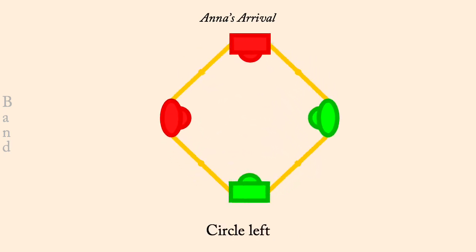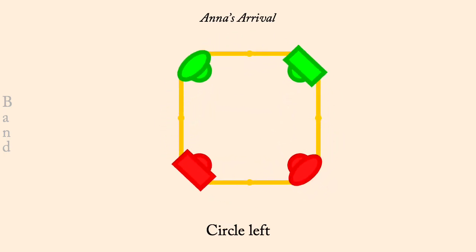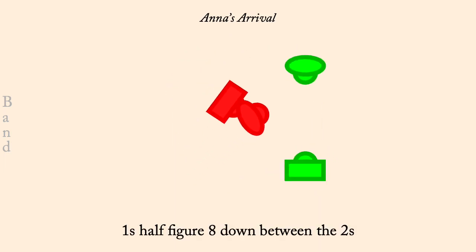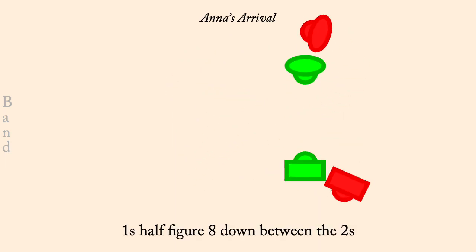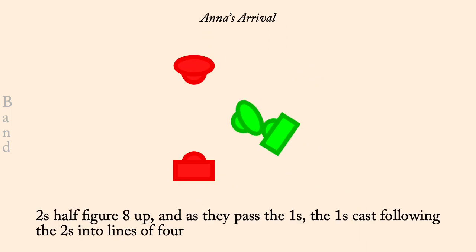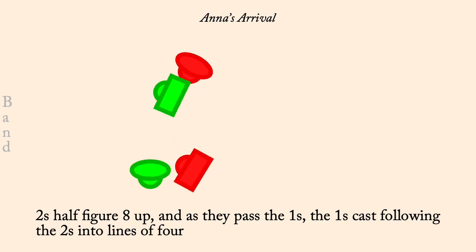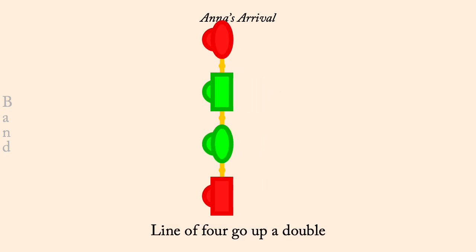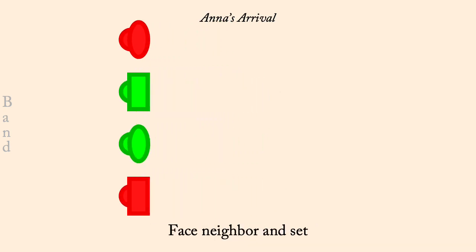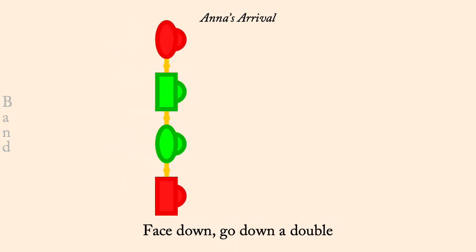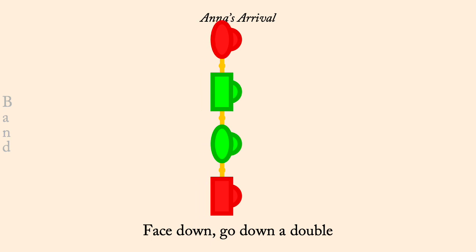Circle left. Ones half figure eight down between the twos. Twos half figure eight up into the middle of a line of four as ones cast to ends. Line of four go up the hall. Neighbor set. Line of four go down the hall.